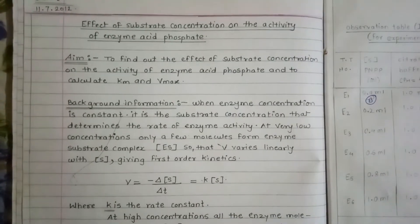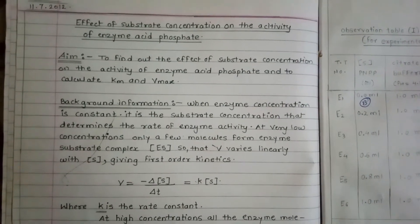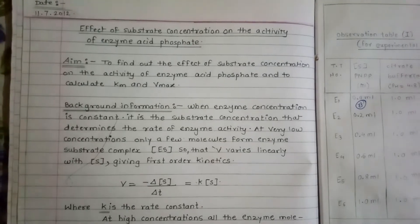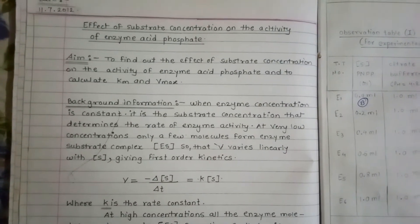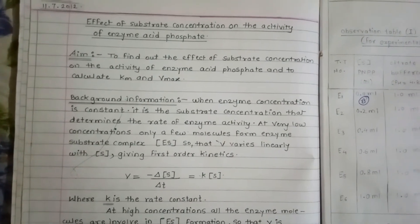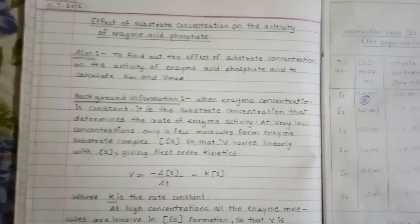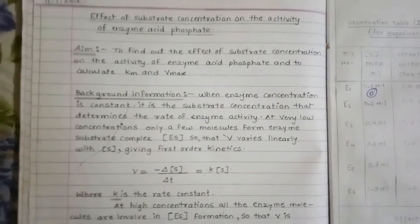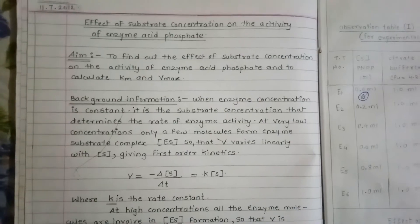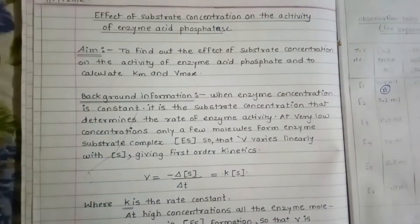Today we will be discussing an experiment called the effect of substrate concentration on the activity of enzyme acid phosphatase. Acid phosphatase belongs to the enzyme class hydrolases, and it is a marker enzyme of the organelle lysosome. As the name suggests, acid phosphatase works best at acidic pH.